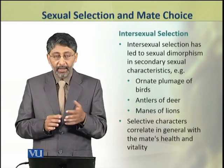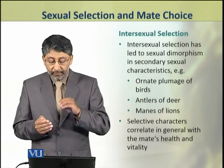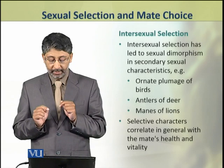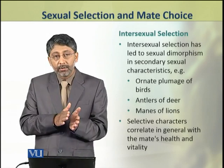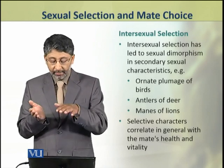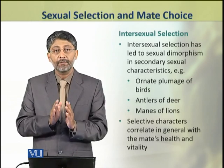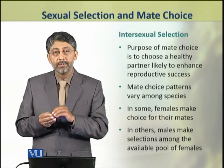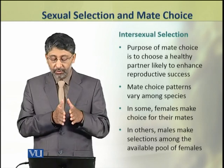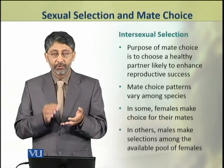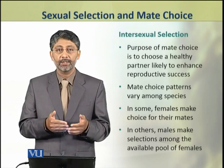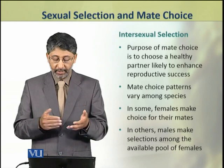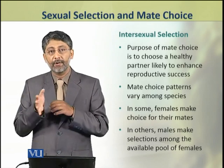These are secondary sexual characters, which represent sexual dimorphism and intersexual selection. These are the main characters that you can identify with the general health and vitality of a mate. The purpose of mate choice is to choose a healthy partner which is likely to enhance reproductive success. Mate choice patterns vary among species — in some species females make the choice, and in others males make the choice from the available pool of females.